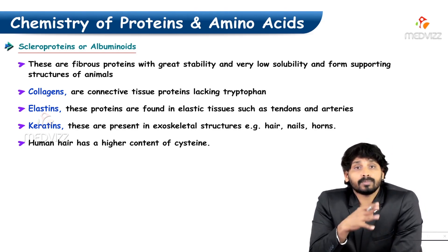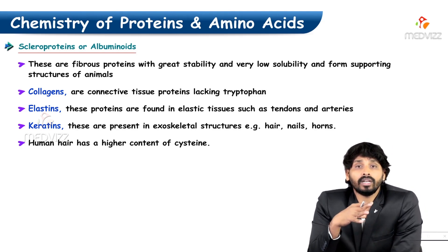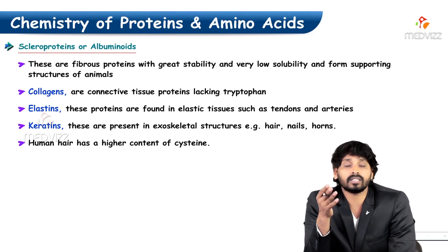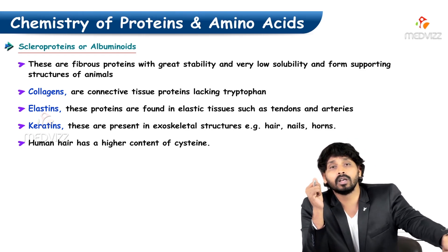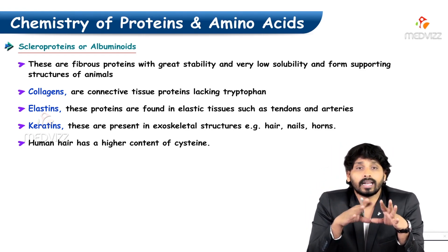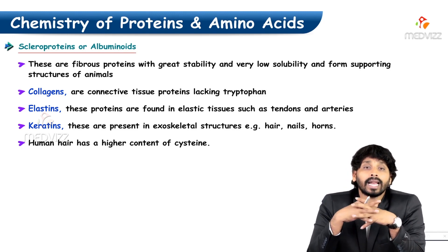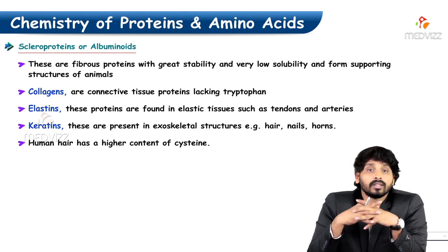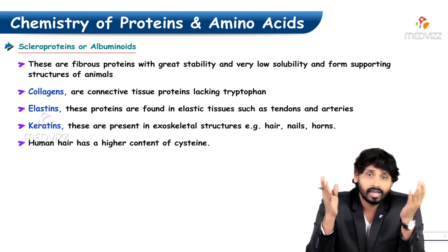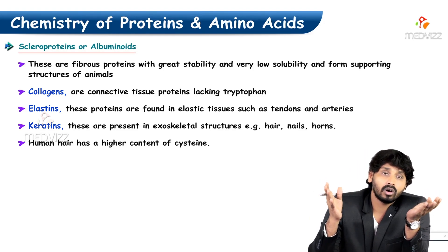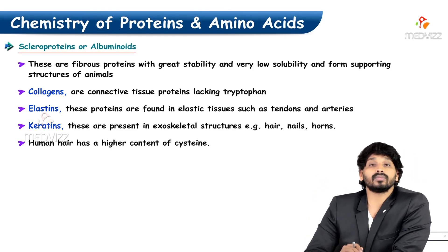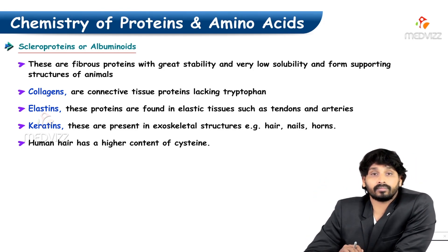Elastins are proteins found in elastic tissue such as tendons and arteries — essentially extendable joints. Keratins are present in exoskeletal structures like hair, nails, and horns. Human hair has a high content of cysteine.